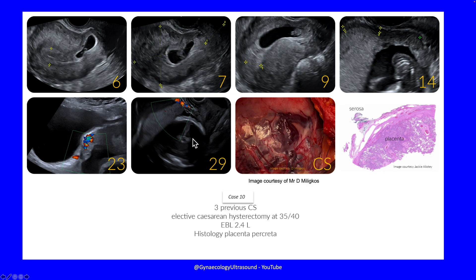Choosing one case: at six weeks, seven weeks, and nine weeks gestation you can see the pregnancy beginning to fill the cavity. At 14 weeks there is very little residual myometrial thickness. The placentation is going toward the bladder but not actually invading it. At 29 weeks, similarly at hysterectomy, you can see huge vessels and a very deficient section scar. She had a caesarean hysterectomy, and placenta accreta spectrum — percreta — was diagnosed at histology.